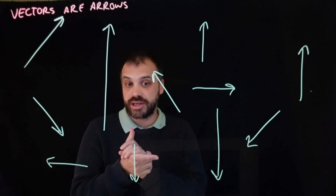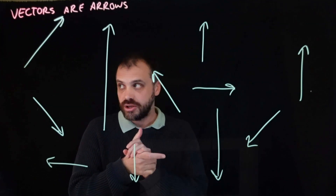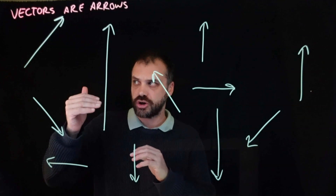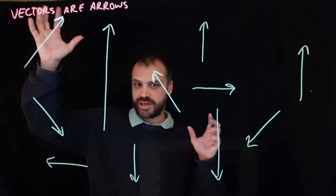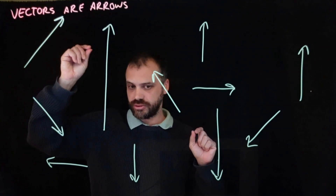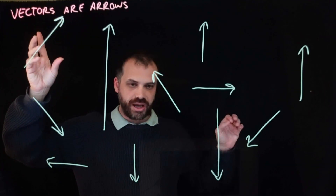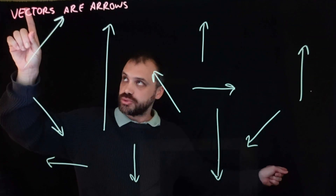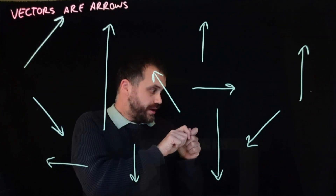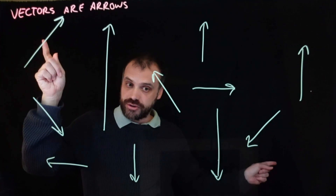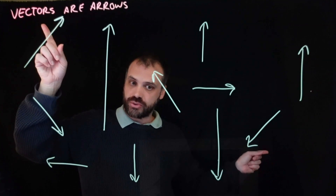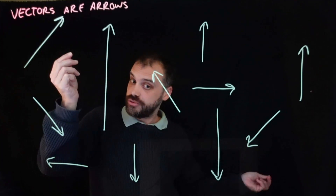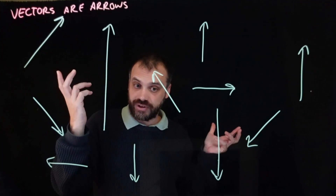If you want another example of a 3D vector, look around the room — look at the top left-hand corner of your room, look at the back right-hand lower corner, and draw a line between those two. That arrow from one corner to another corner would be a three-dimensional vector.